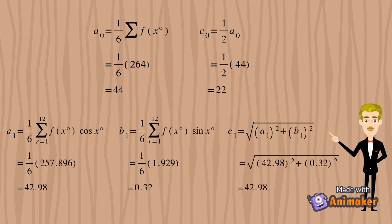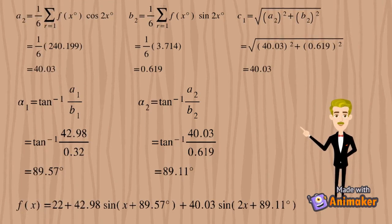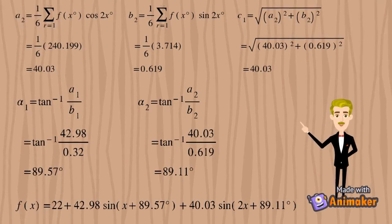Some of the parameters are: a0, c0, a1, a2, b1, b2, c1, c2, as well as the angle. This slide shows the remaining calculation of our data. Finally, the bottom equation on the screen shows the complete harmonic equation up to the second harmonic, based on the problem stated earlier.